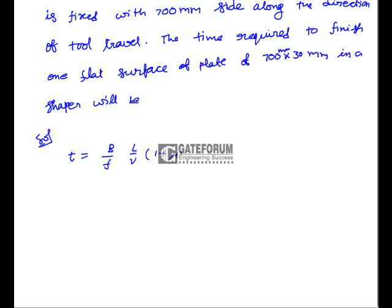The machining time formula is: time per cut = (B/F) · (L/V) · (1 + μ), where μ is the return-to-cutting time ratio, L is total length of cut, V is cutting speed, B is width, and F is feed rate. The plate length is 700 mm, but with clearance of 25 mm at each end, the total cut length L = 700 + 2×25 = 750 mm.